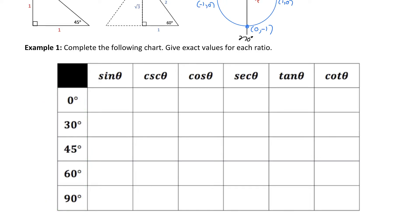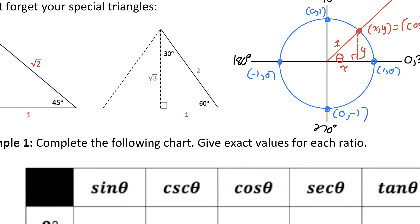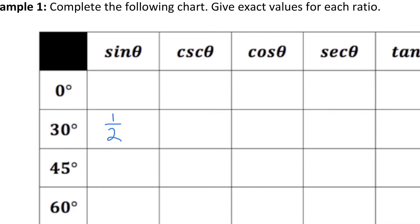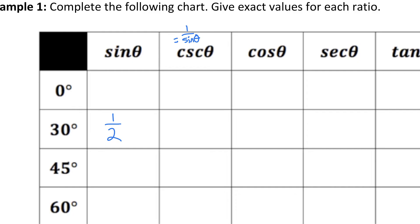Example 1 says to complete the chart and give exact values for each ratio. Let's start by filling out the row for the 30 degree reference angle. For sine of 30 degrees, I'll look at my special triangle — sine is opposite over hypotenuse, so sine of 30 is 1 over 2. Cosecant is the reciprocal of the sine ratio, so cosecant of 30 equals 1 over one-half. Doing 1 divided by a fraction flips it, so instead of 1 over 2, it becomes 2 over 1, which is just 2.